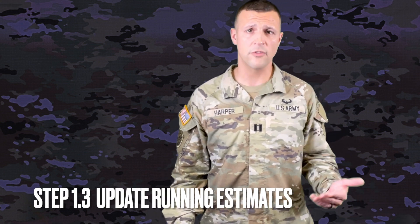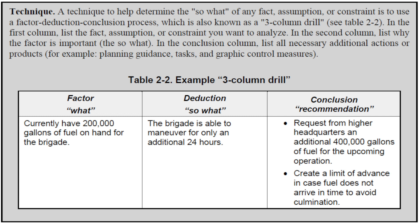Sub-step three: update your running estimates. Here's a technique from the Staff Reference Guide called the three-column drill. In the first column, list the fact, assumption, or constraint you want to analyze. In the second column, list why the factor is important — the 'so what.' In the conclusion column, list all necessary additional actions or products, such as planning guidance, tasks, or graphic control measures.